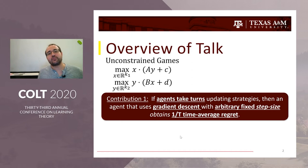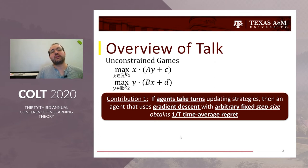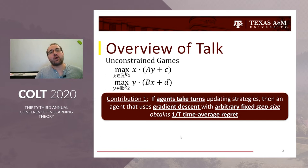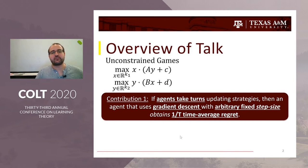What we're going to show in this talk is a twist on standard optimization — we'll actually have agents take turns. When we do this, if one of the agents uses gradient descent with an arbitrary fixed step size, that agent is going to obtain 1 over t time average regret, which is much stronger than standard gradient descent guarantees.